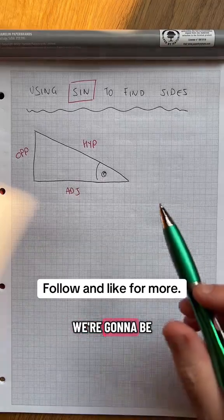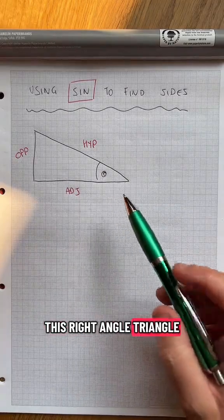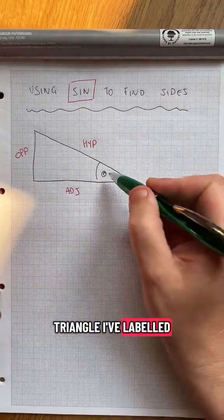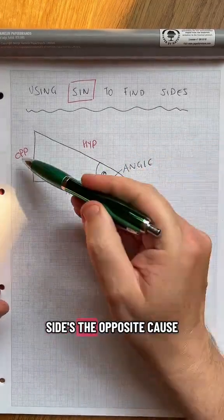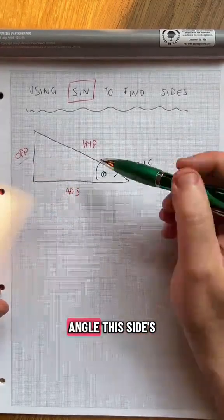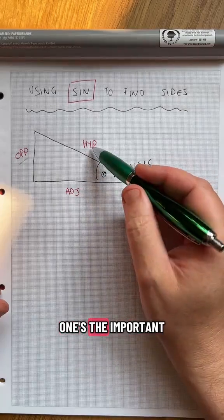More triangles. In this one we're going to be using sine to find sides of this right angle triangle. So there's my triangle, I've labeled the angle that's my angle there. Look, which means this side's the opposite because it's opposite the angle. This side's the adjacent because it's adjacent to the angle.